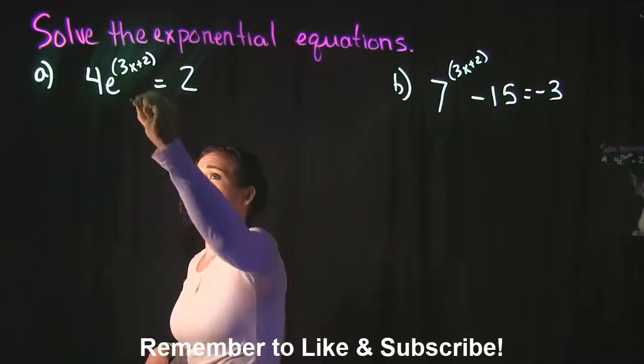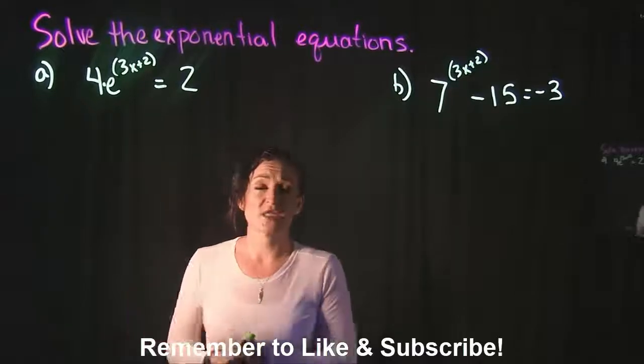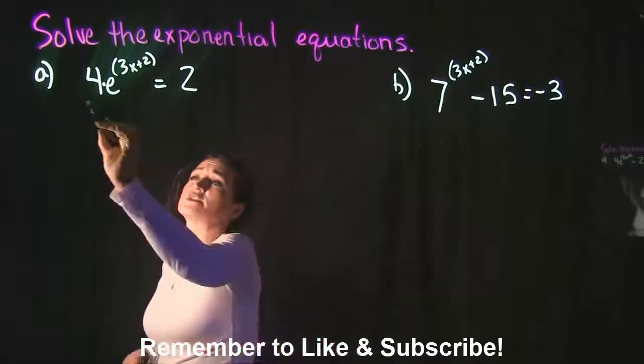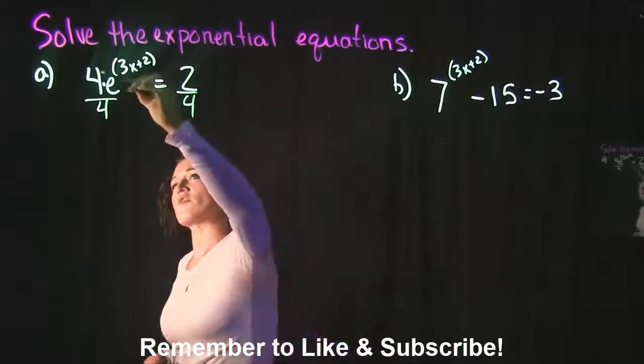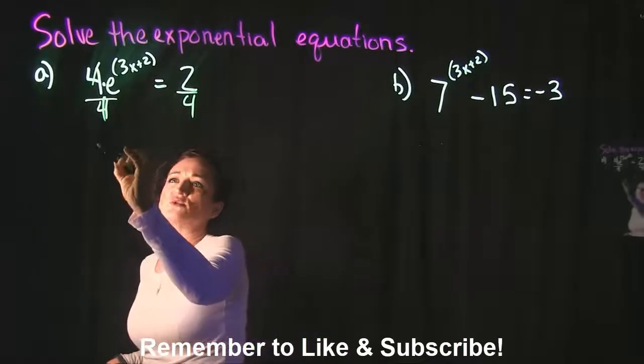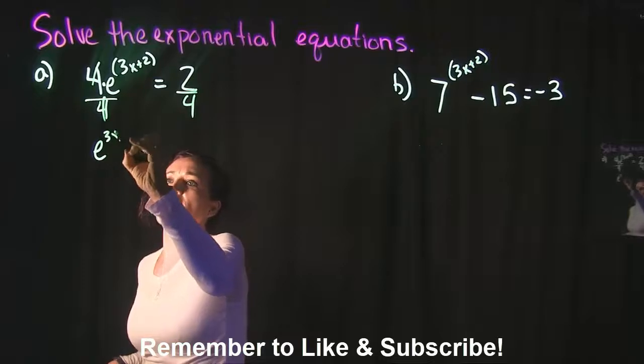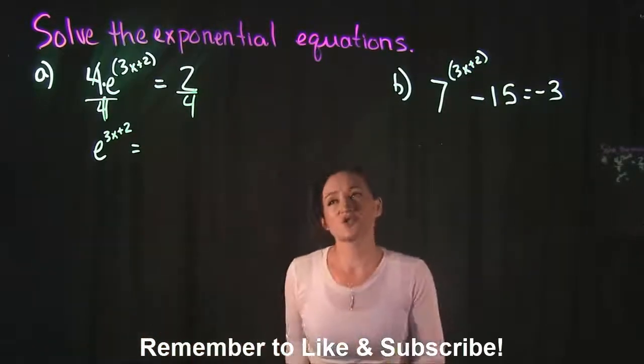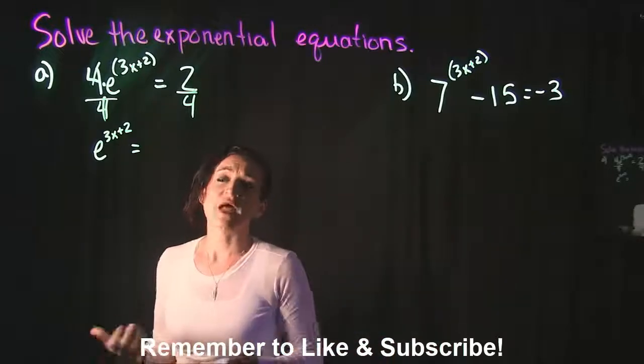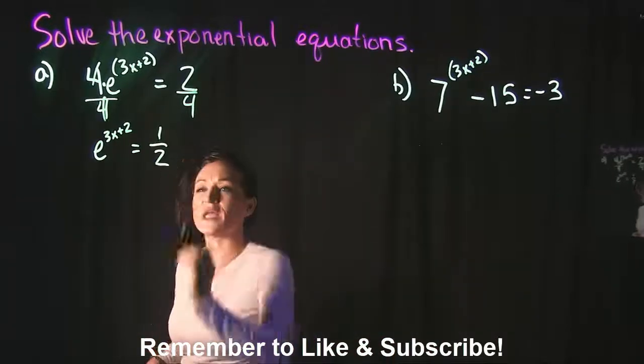The 4 in front is getting multiplied to e^(3x+2). So in order to get rid of that 4, we're going to divide it on both sides. On the left side, 4 over 4 cancels, leaving us with e^(3x+2). And that equals 2 divided by 4, which simplifies to 1/2.